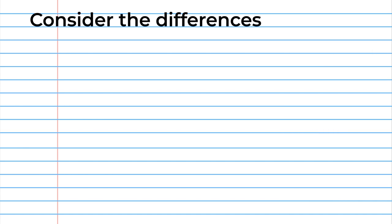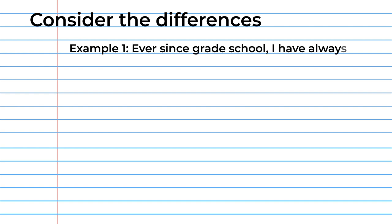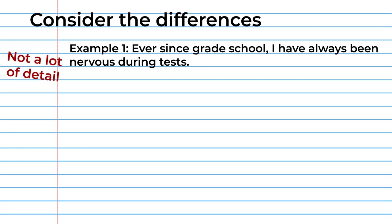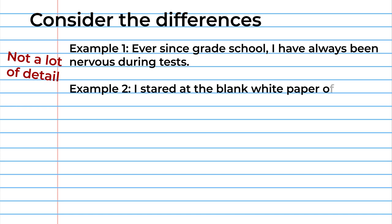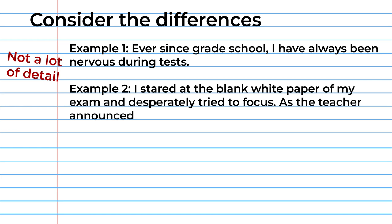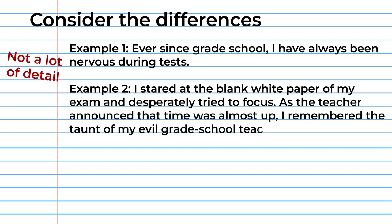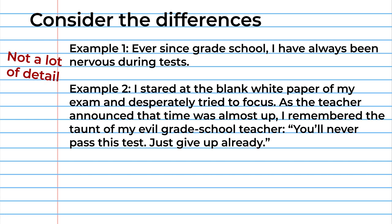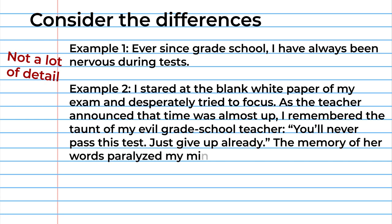Consider the differences between the sentences below. Example 1: Ever since grade school, I have always been nervous during tests. That's not a lot of detail. Now Example 2: I stared at the blank white paper of my exam and desperately tried to focus. As the teacher announced that time was almost up, I remembered the taunt of my evil grade school teacher: 'You'll never pass this test. Just give up already.'